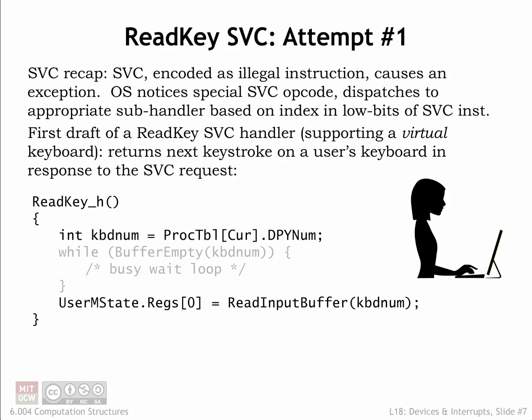When a user-mode program wants to read a typed character, it executes a read key supervisor call. The binary representation of the SVC has an illegal value in the opcode field, so the CPU hardware causes an exception, which starts executing the illegal opcode handler in the OS. The OS handler recognizes the illegal opcode value as being an SVC and uses the low-order bits of the SVC instruction to determine which sub-handler to call.